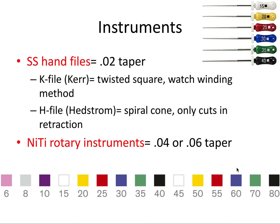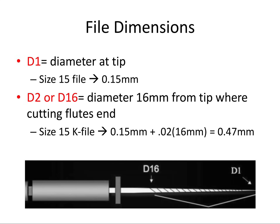For file dimensions, we have two important points along the cutting edge. D1 references the diameter at the very tip of the file. So a size 15 file will be 0.15 mm in diameter at its tip, a size 20 file would be 0.20 mm, and so on — that's how the number relates to its diameter.